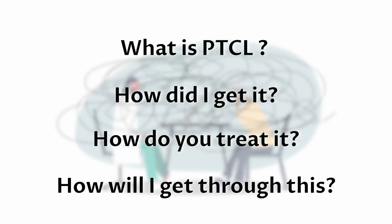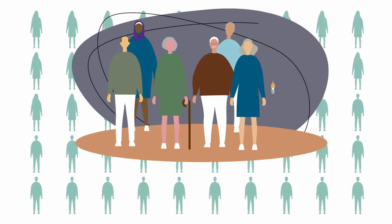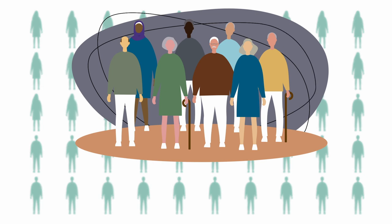Peripheral T-cell lymphoma, or PTCL, is a rare form of cancer that typically affects older adults, though it can occur at any age, and is more common in males than females.